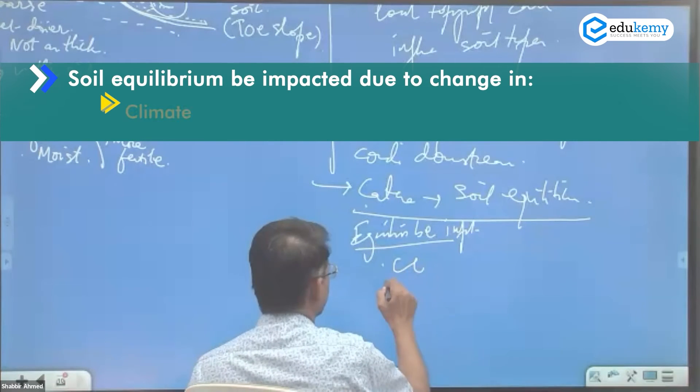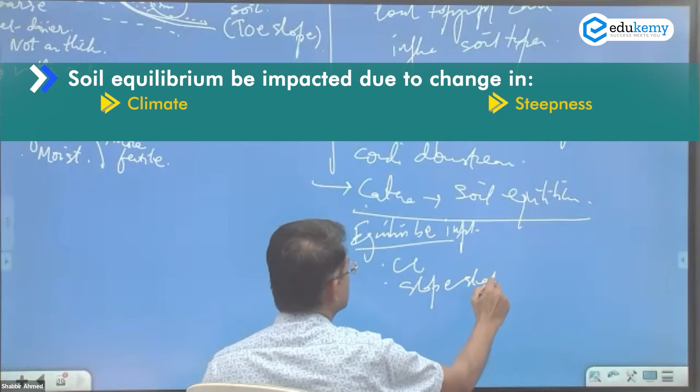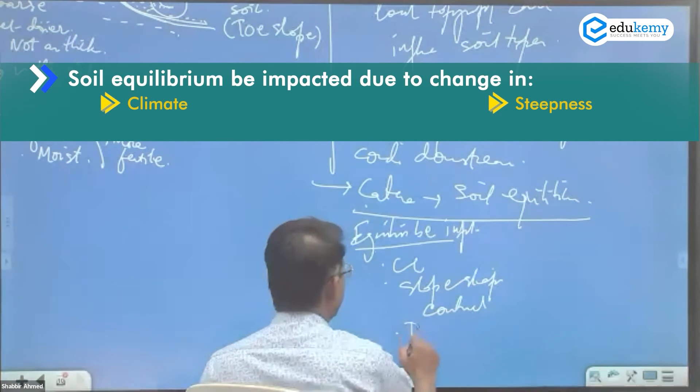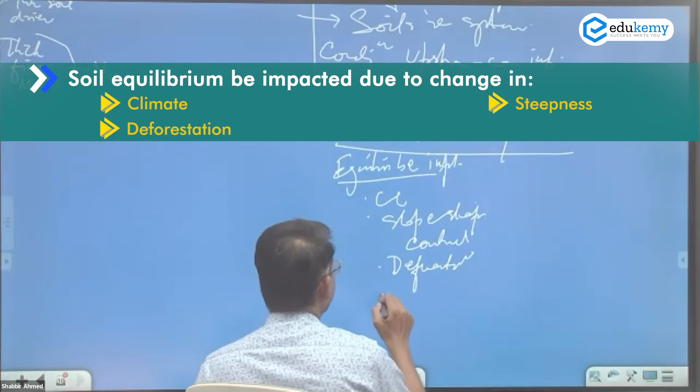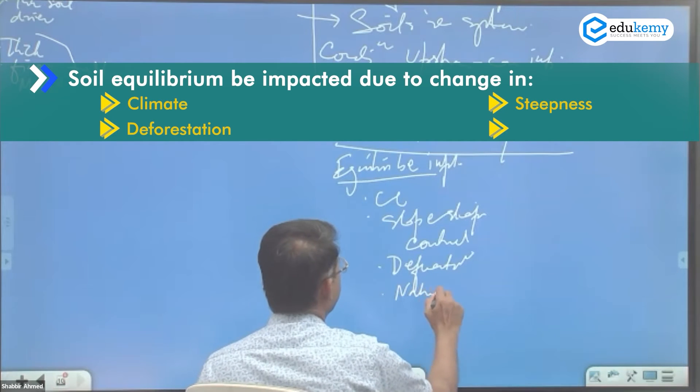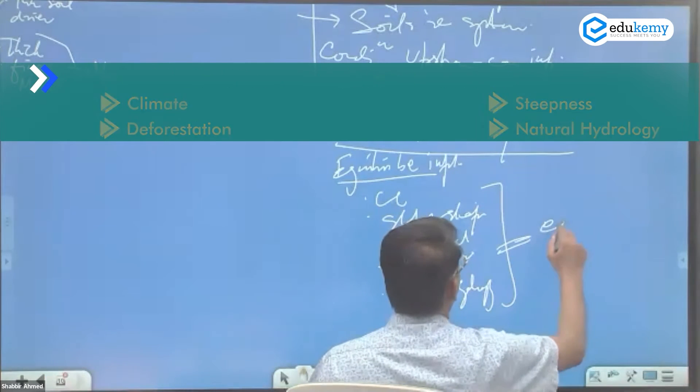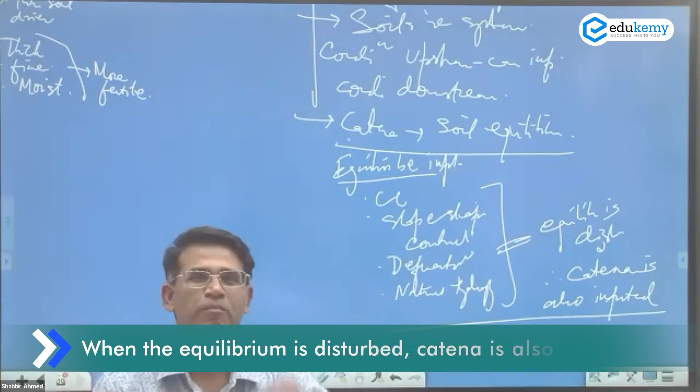What are the conditions in which the equilibrium can be impacted? How can the equilibrium be impacted? Say climate change. Say slope steepness has changed because of maybe construction. Deforestation. Say deforestation has happened. Say there is change in the natural hydrology. In all of this, the equilibrium is disturbed and therefore catena is also impacted.